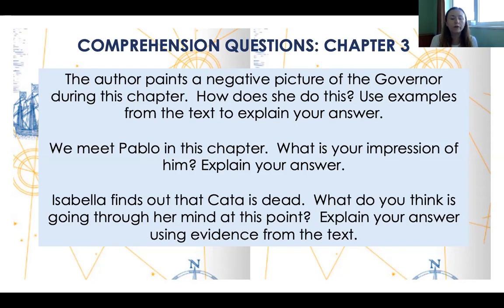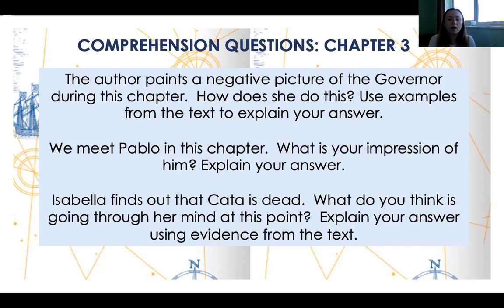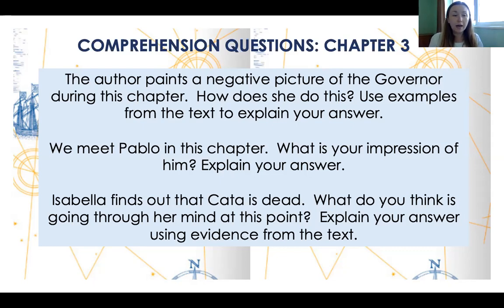We meet Pablo in this chapter — what is your impression of him? Isabella finds out that Katta is dead. What do you think is going through her mind at this point? Don't just say she feels sad or upset or angry — think about what thoughts are racing through her mind based on what she already knows, what she thinks might have happened, and what she's already heard from someone else. Go back through and find evidence for why she might be thinking certain things.